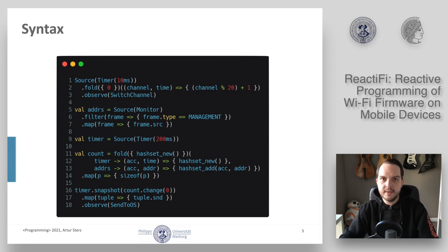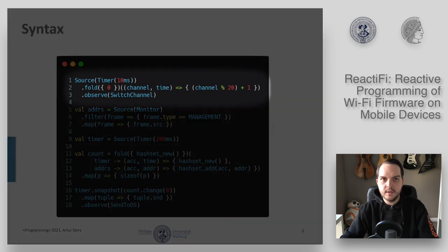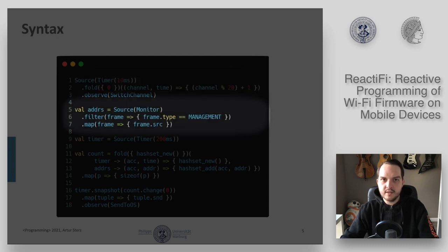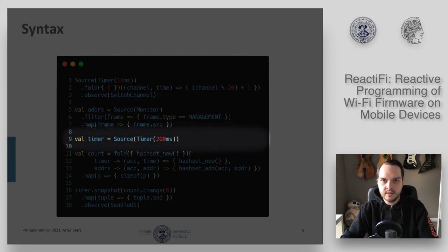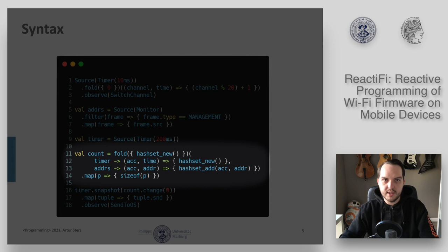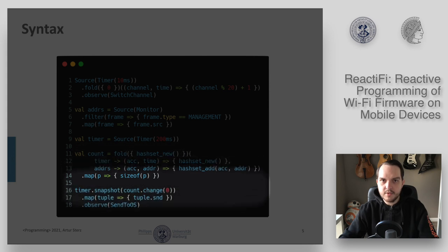This is the code for counting surrounding devices, which is done using five reactives. The first one switches the channel every 10 milliseconds using a timer source and the switch channel observe. The second reactive gets all incoming frames in monitor mode, removes all non-management frames, and returns only the source address of every frame. The next reactive fires an event every 200 milliseconds, which triggers the execution of the two next reactives. Line 11 shows the first one, where the actual counting happens. When the timer event is triggered, the hash map is cleared; otherwise a new address is added and the size of the map is returned. Additionally, when the timer triggers, the number of addresses is sent to the kernel using the sendToOS observe.